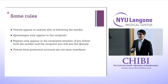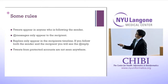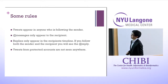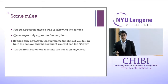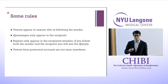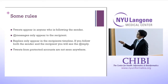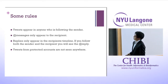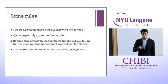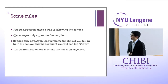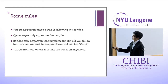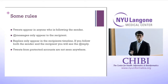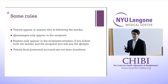Some rules: tweets appear to anyone following the sender. At-messages only appear to the recipient and don't show up in the public feed. Replies only appear in the recipient's timeline, unless the user follows both people — then they'll see the reply. There's also a protected account option where any activity on the platform is not recorded anywhere and can't be seen at all.